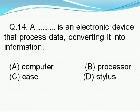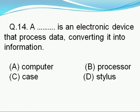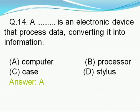Question number 14: A dash is an electronic device that processes data, converting it into information — option A: computer, option B: processor, option C: case, option D: stylus. Right answer is A, i.e., computer. A computer is an electronic device that processes data converting it into information.